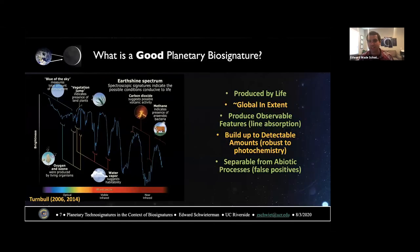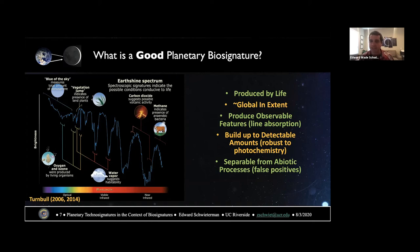What is a good planetary biosignature? It has to be produced by life, global in extent, and produce observable features. Chemosynthesizers clinging to life in a subsurface of an exoplanet probably won't create an observable signature. So when we're looking for remote biosignatures, we're probably looking for highly productive biospheres that can change the characteristics of their planetary spectrum. Survivability is also important — biosignature gases need to survive photochemical destruction from ultraviolet light from their host star and be separable from abiotic processes.